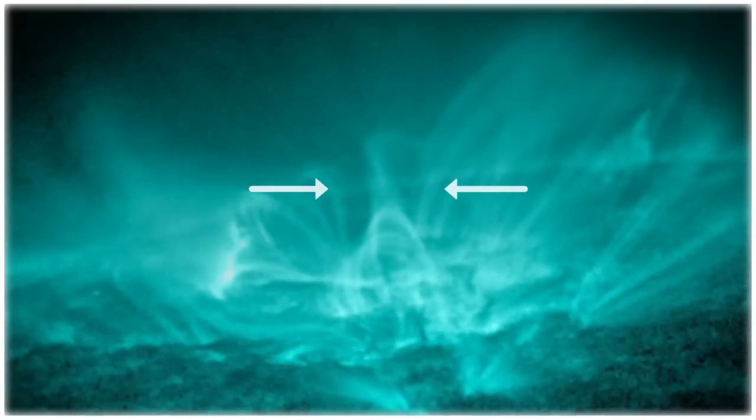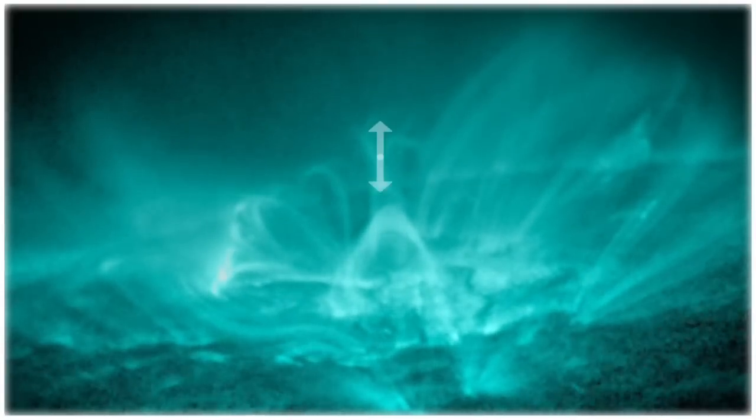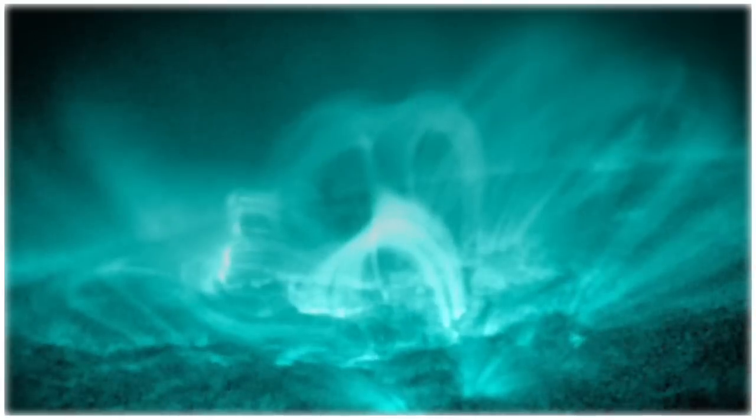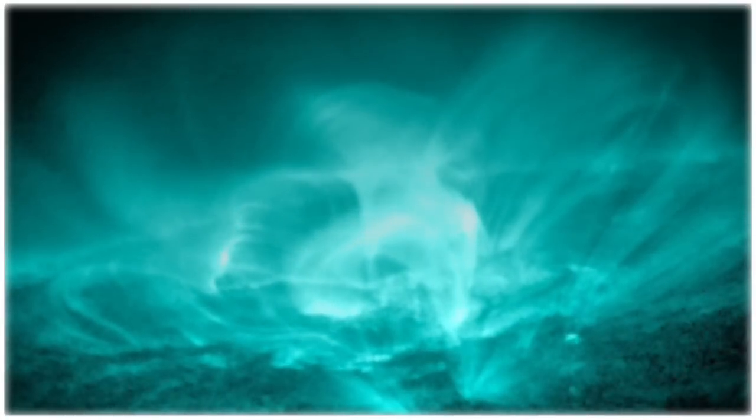We see reconnection occur as an X shape begins to form and then splits, with half the solar material falling down and the other half escaping into space. A flare bursts from the arcade of loops and reconnection propagates further down the arcade.